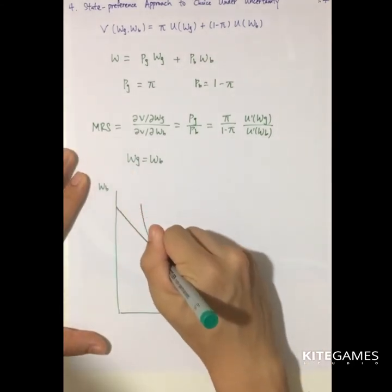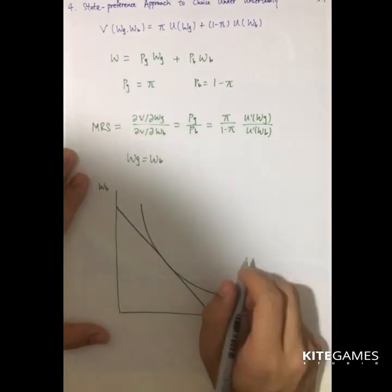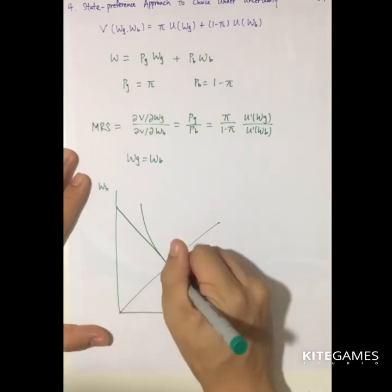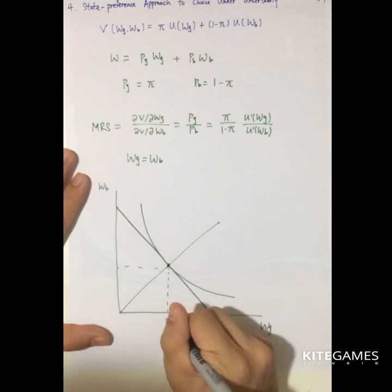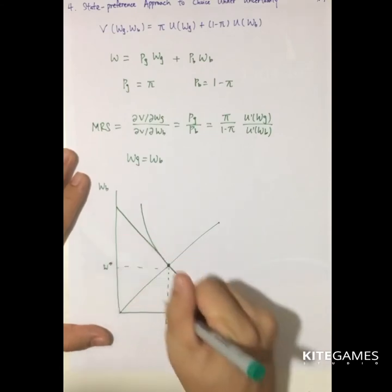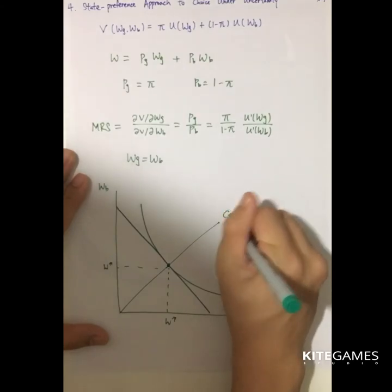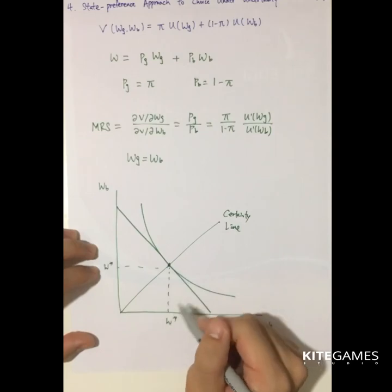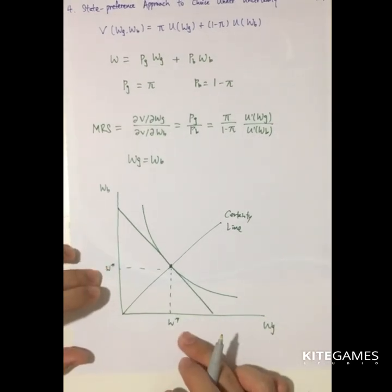And the budget constraint is like this. Then in this case, you know the 45 degree line will separate the wealth equally. So we call this line a certainty line. That means if the wealth is certain, then in this case, no matter what is the state tomorrow, your wealth will be the same.